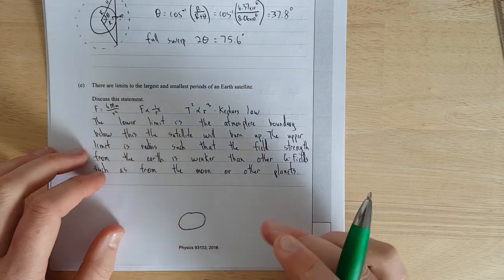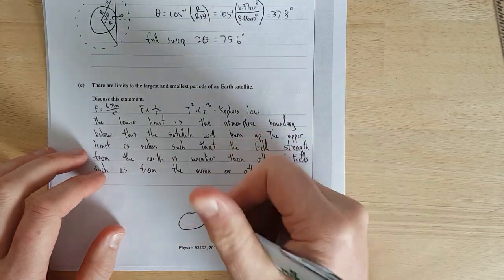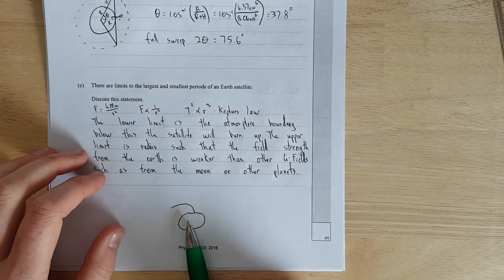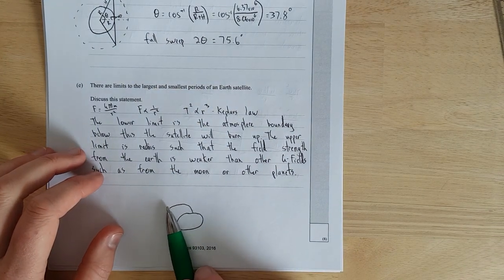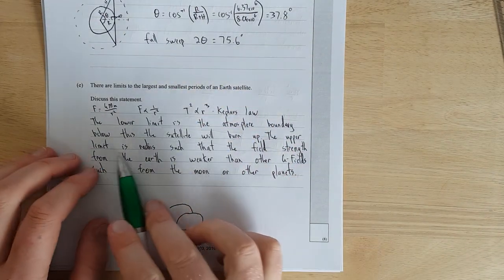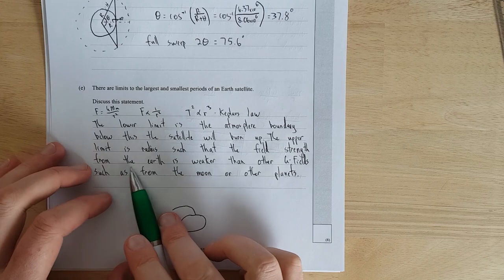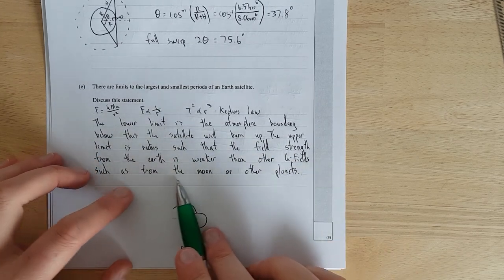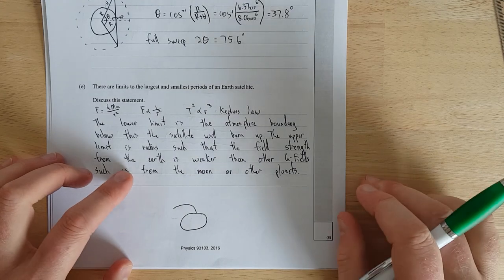So if you see rocket launches and you see like the long exposure from a camera normally they look sort of like this, they sort of take off straight up but they start turning pretty quickly and eventually they're going sideways. The upper limit is a radius such that the field strength from the Earth is weaker than other gravitational fields such as from the moon or other planets. That's really about it.